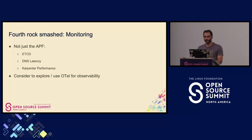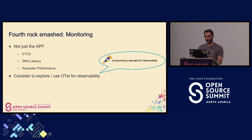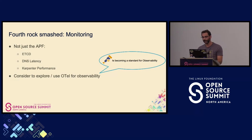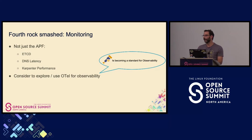Another approach is to use OpenTelemetry. It's becoming the standard in observability — a new way of presenting and gathering metrics, and several monitoring systems already support it. In fact, there is an EKS add-on which, with a single click, installs all the necessary components inside Kubernetes for gathering metrics and enabling the OpenTelemetry extension.